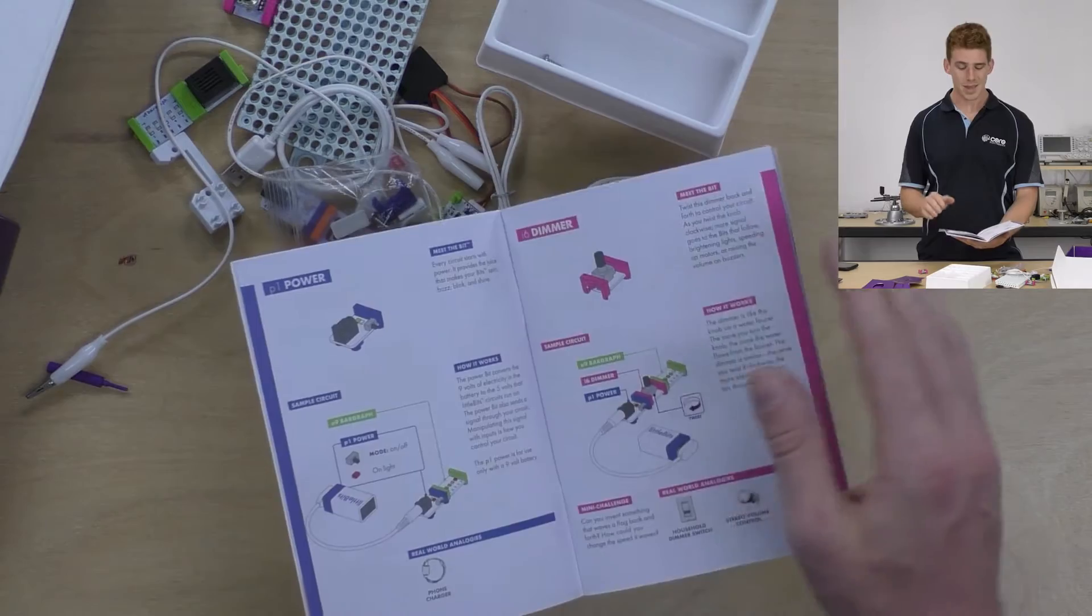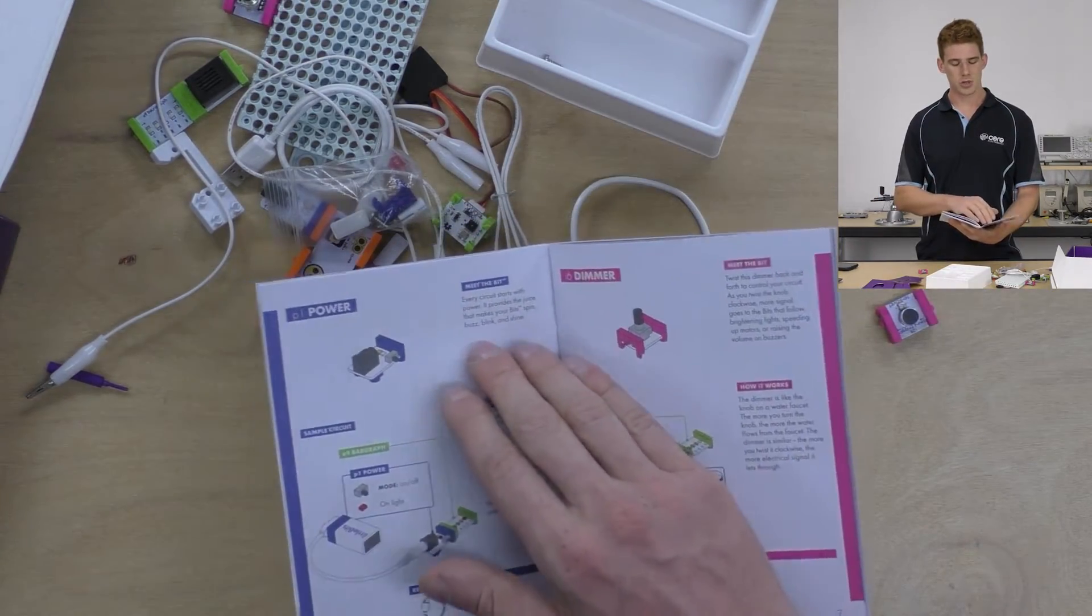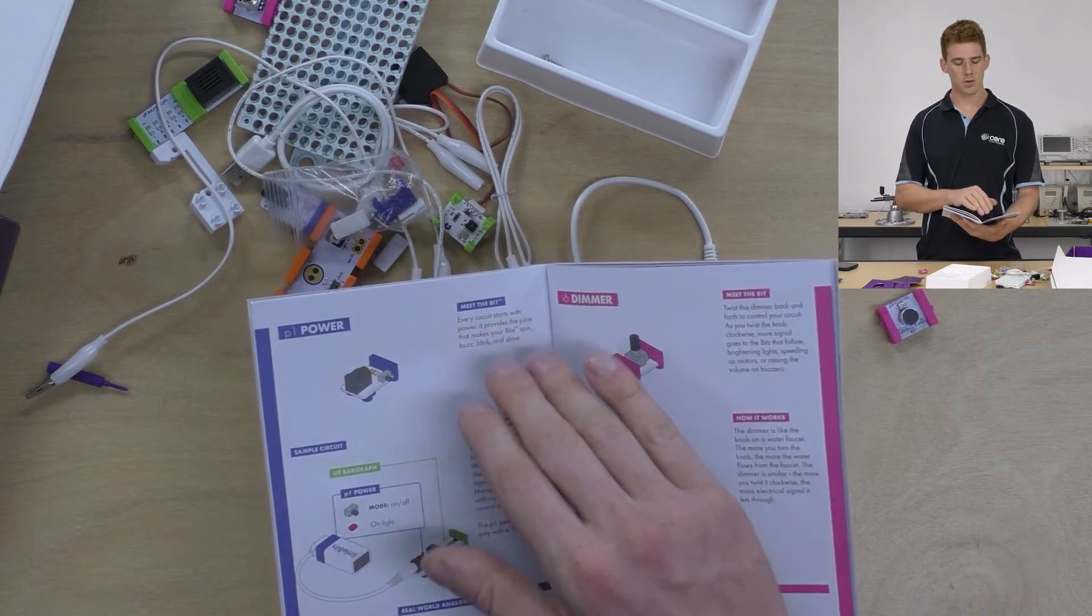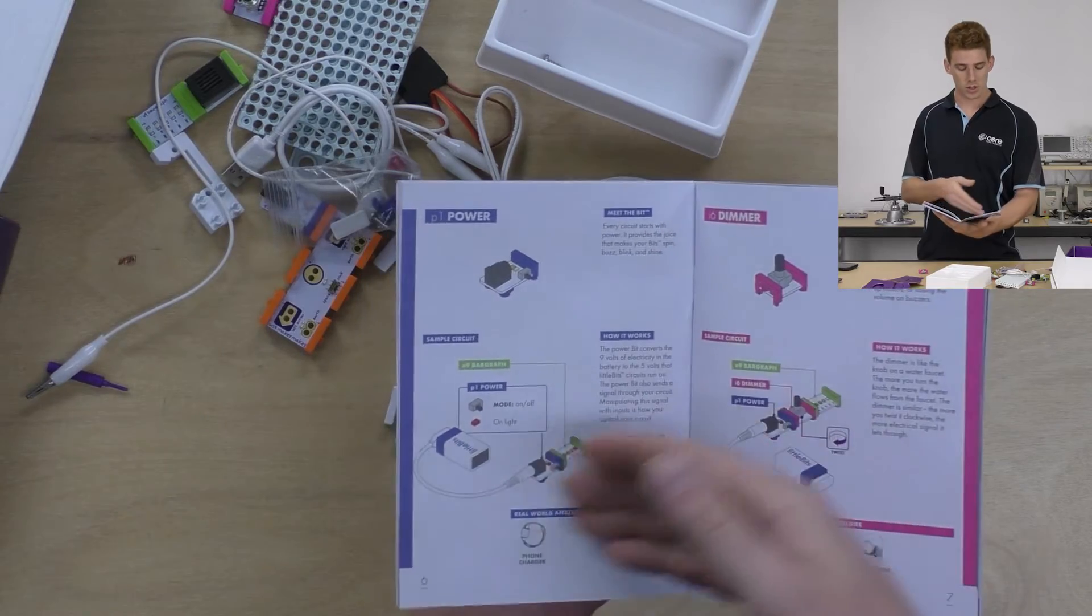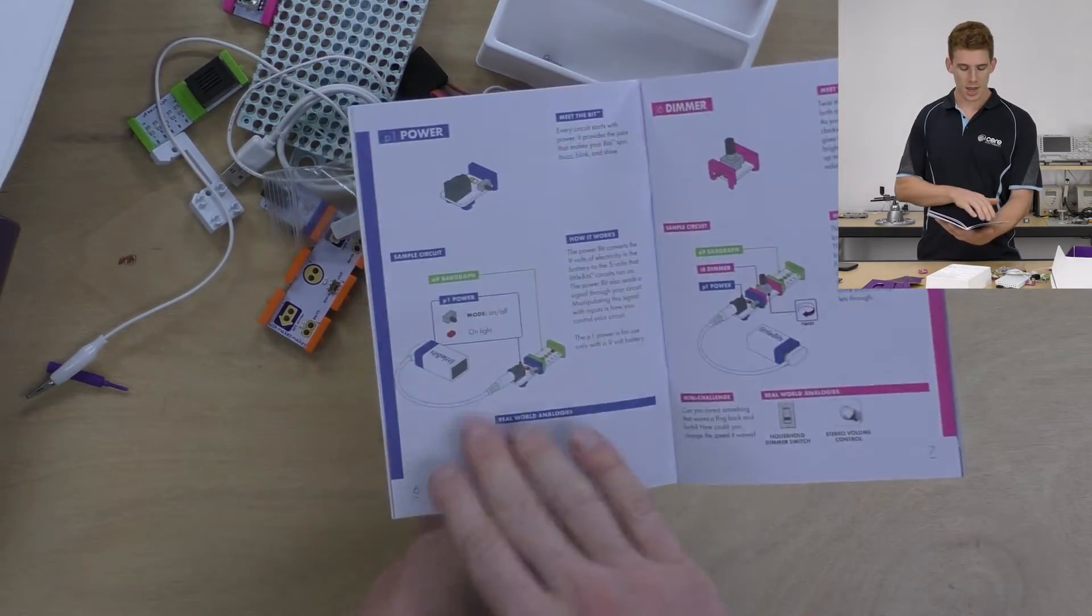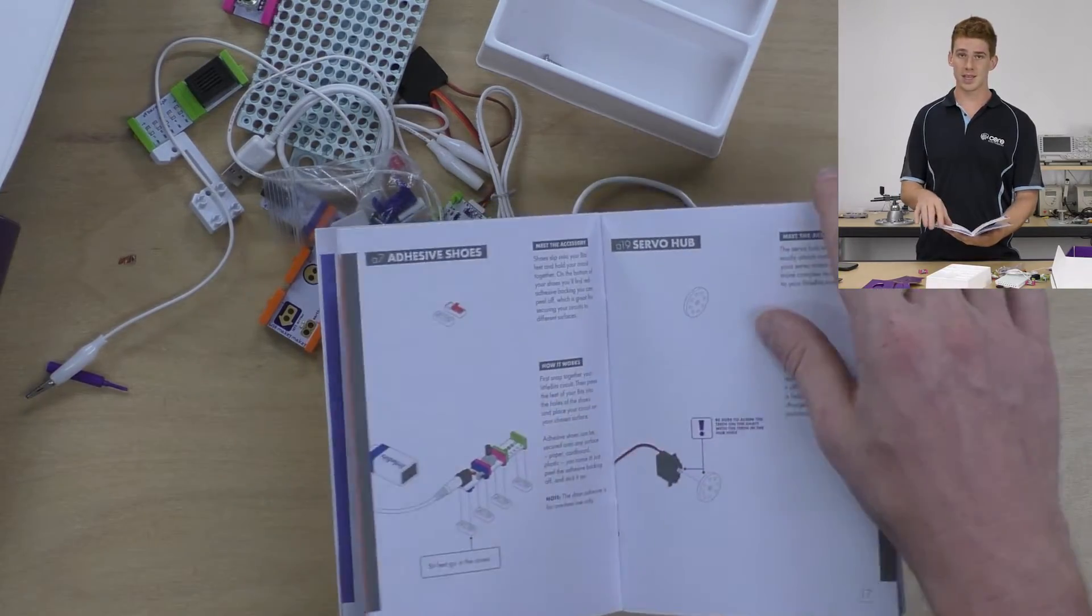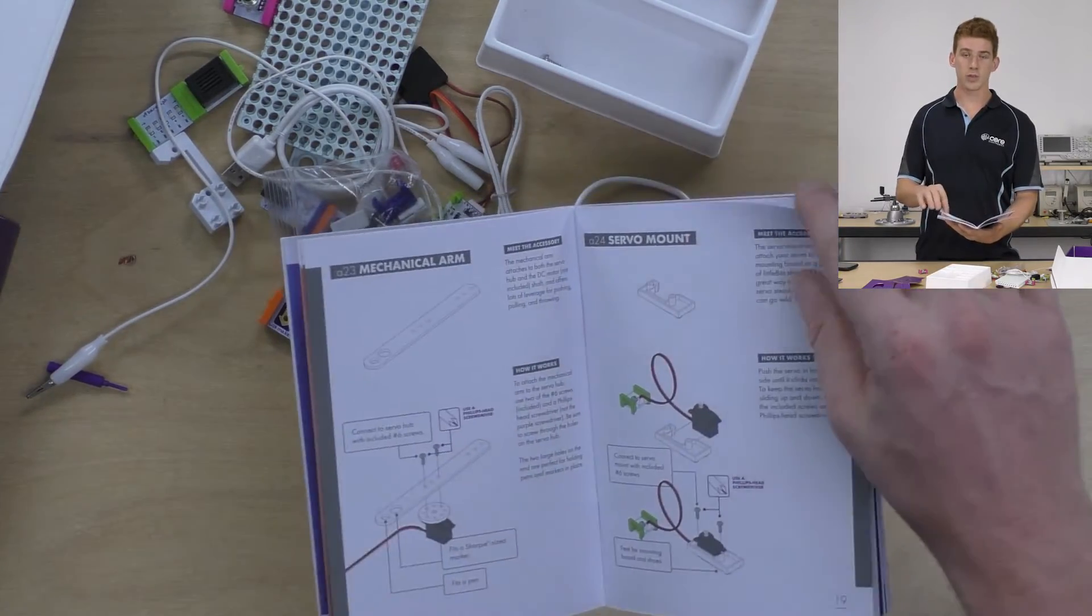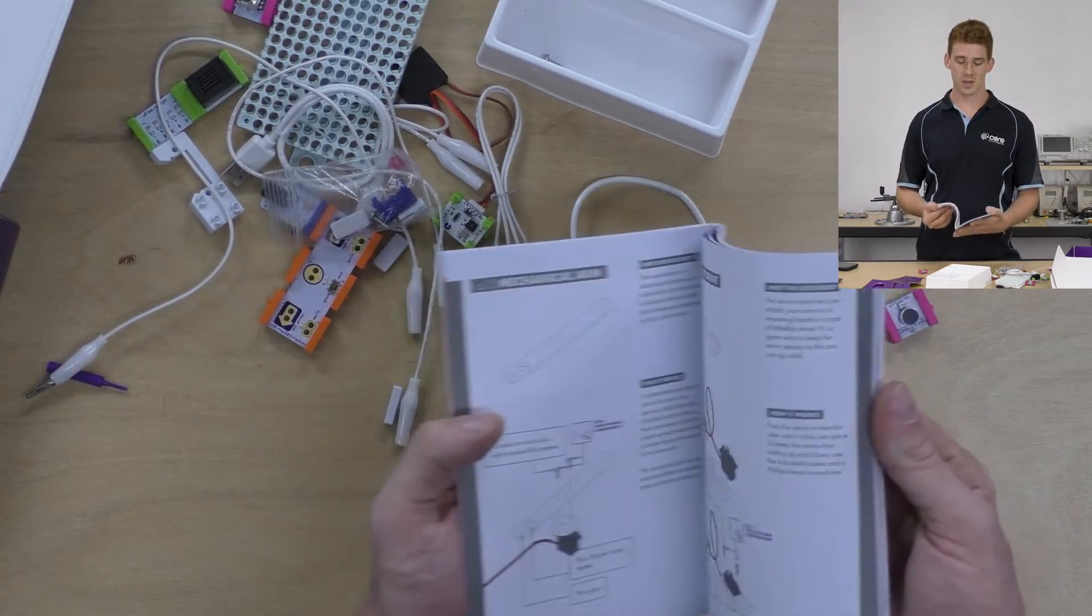All right, so now we've got the meet the bit section. For example, the power bit, it tells you that every circuit starts with power, providing the juice that makes your bits spin, buzz, blink, and shine. It then tells you how the bit works, shows you a sample circuit, and gives you a real-world analogy. If you were to go through every single bit and accessory with a fine tooth comb, you would have a pretty good idea of everything you could do with your bits.